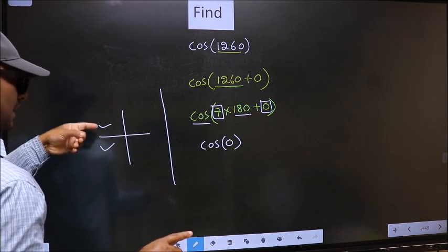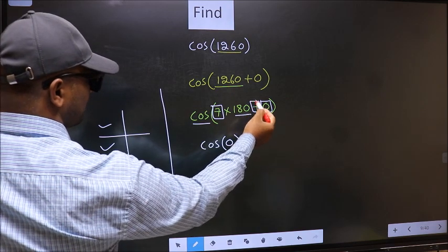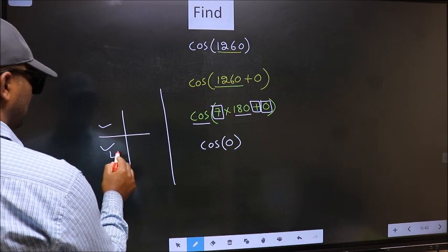So now to select the quadrant, we should look at this symbol. Here we have plus, that means the angle lies in the third quadrant.